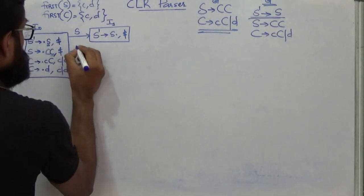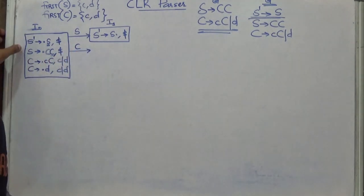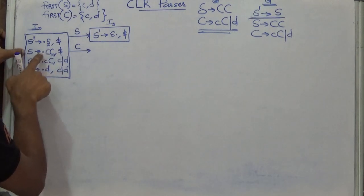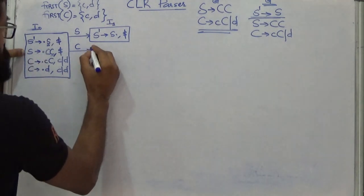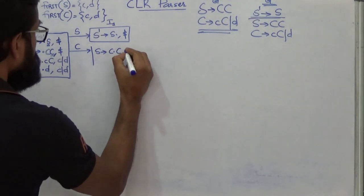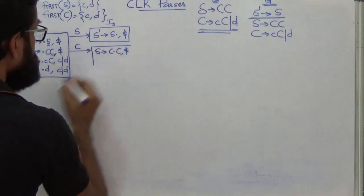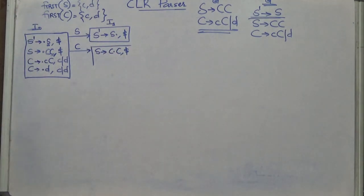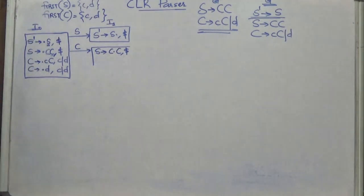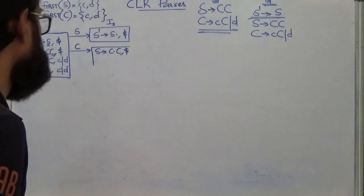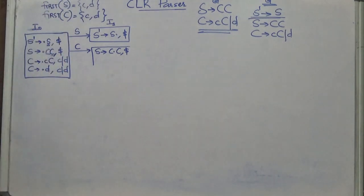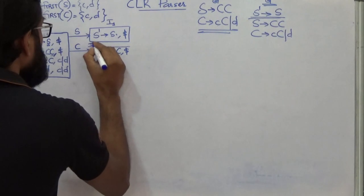Applying transition C from I0: the only production with dot followed by C is S giving dot CC. Shifting the dot gives S giving C dot C. The lookahead remains dollar. This is the initial item. Taking closure — since dot is followed by non-terminal C, add productions for C: C giving dot CC and C giving dot D. The lookahead is computed as FIRST of epsilon concatenated with dollar, which is dollar. Let this be item set I2.